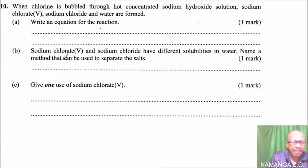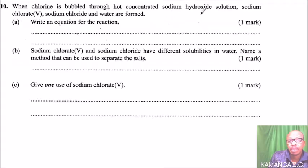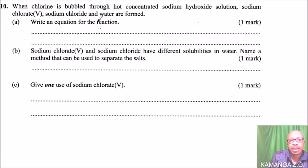This is question number 10. We are told that when chlorine is bubbled through hot concentrated sodium hydroxide solution, sodium chlorate, sodium chloride, and water are formed. We have to write the equation for the reaction.